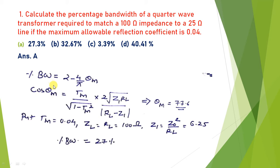θm can be calculated from cos(θm), where cos(θm) = (τm / √(1 − τm²)) × (2√Z1 / |RL − Z1|). The value τm = 0.04, RL = 100 ohm, and Z1 = Z0² / ZL for the quarter wave transformer, giving Z1 = 6.25. Substituting all values gives θm = 77.6°.